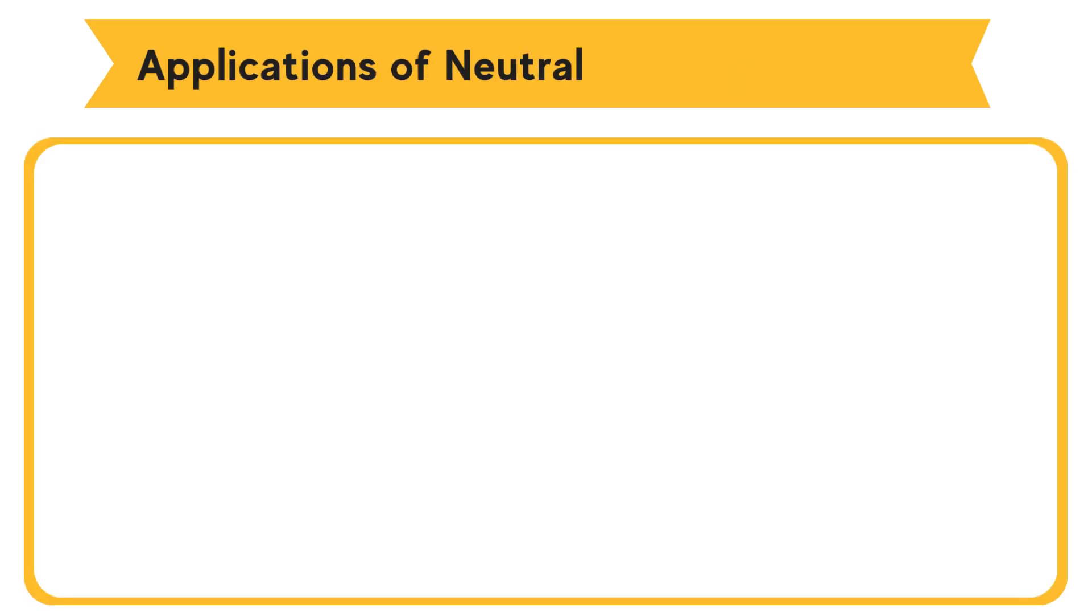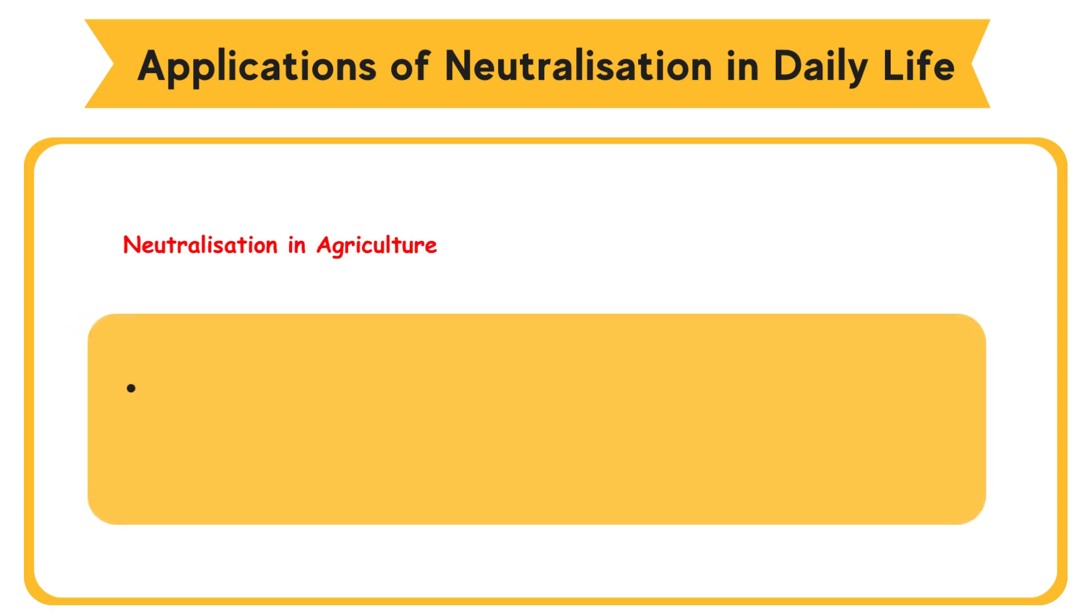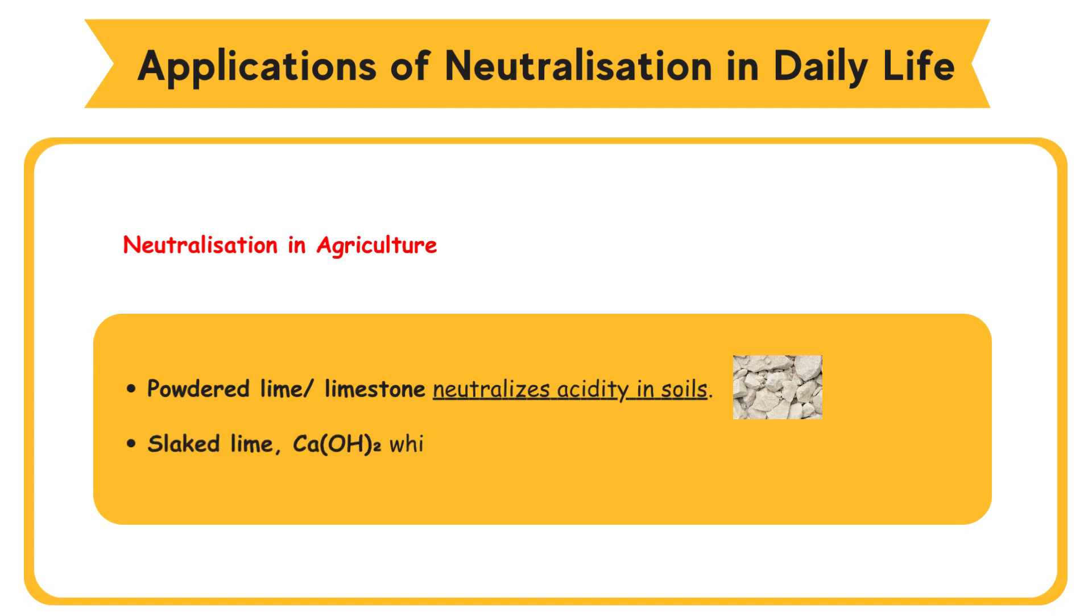Applications of neutralization in daily life. Neutralization in agriculture: Powdered lime or limestone neutralizes acidity in soils. Slaked lime Ca(OH)2, which is alkaline, is used to treat acidic soil.